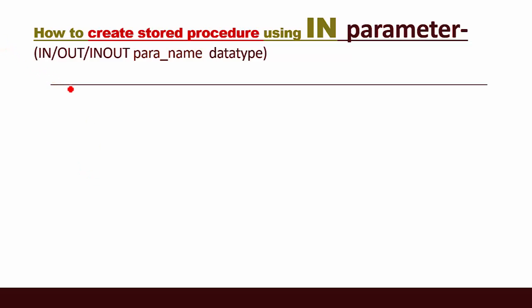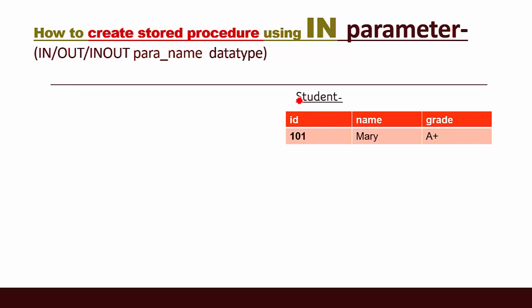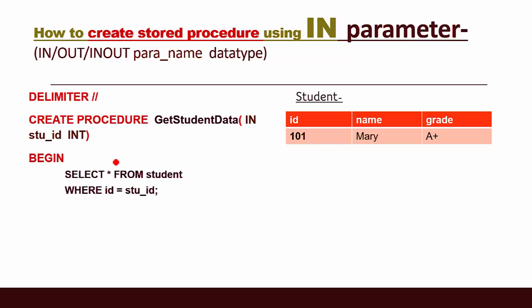Let me show you examples one by one. How to create a stored procedure using an IN parameter. Suppose we have a student table with columns id, name, and grade. We need to input the student id value, and the procedure will output the entire data of that student id. So the parameter mode here is IN.